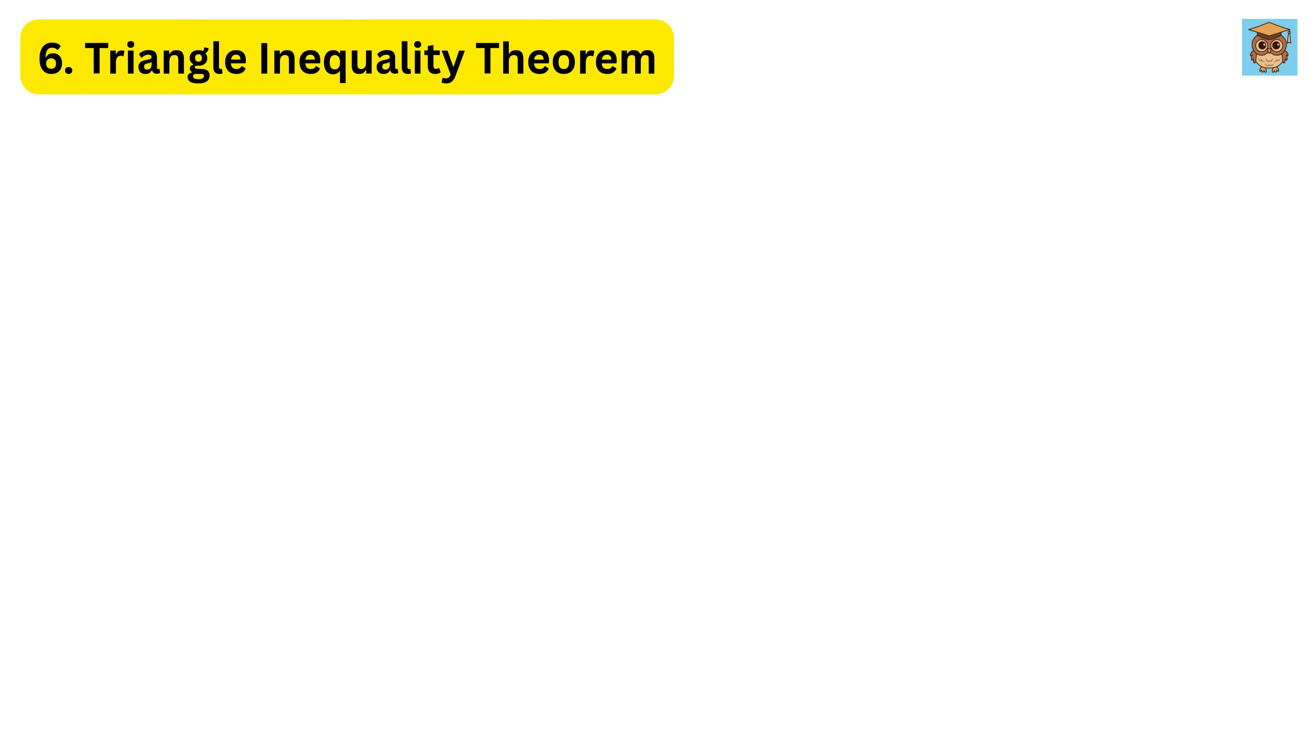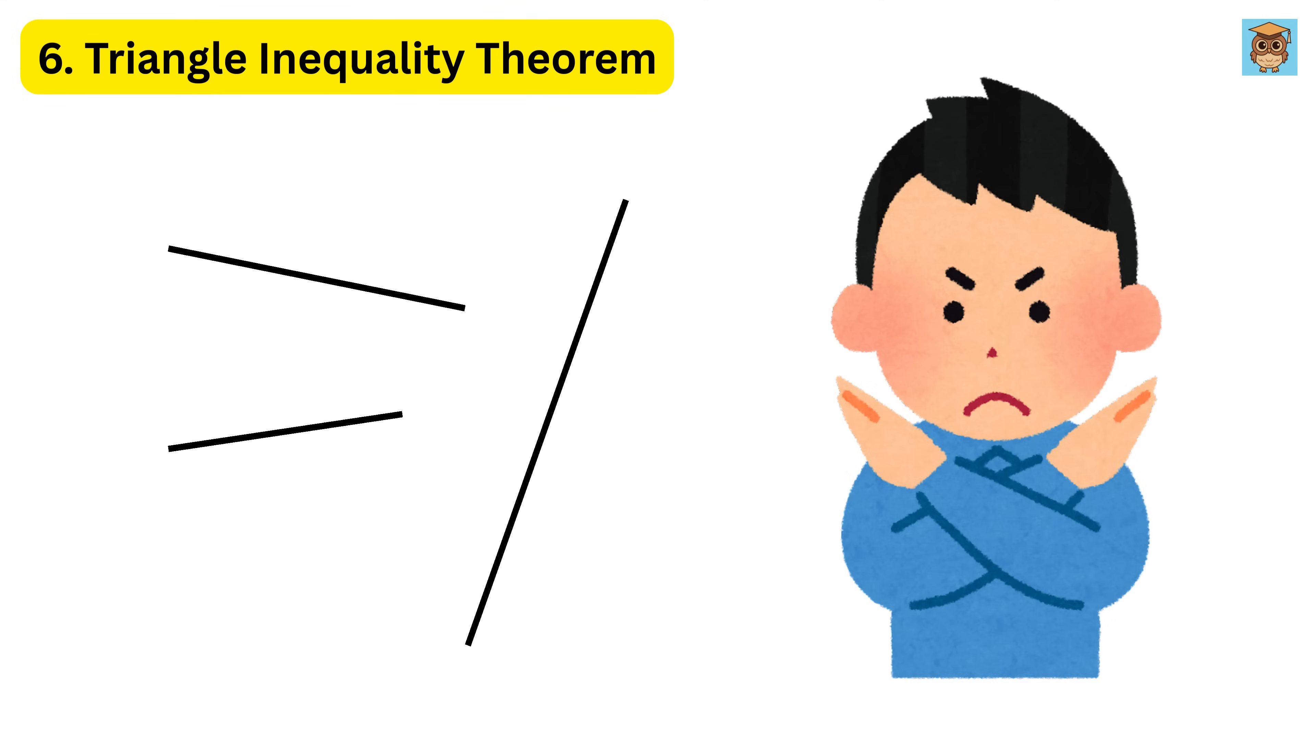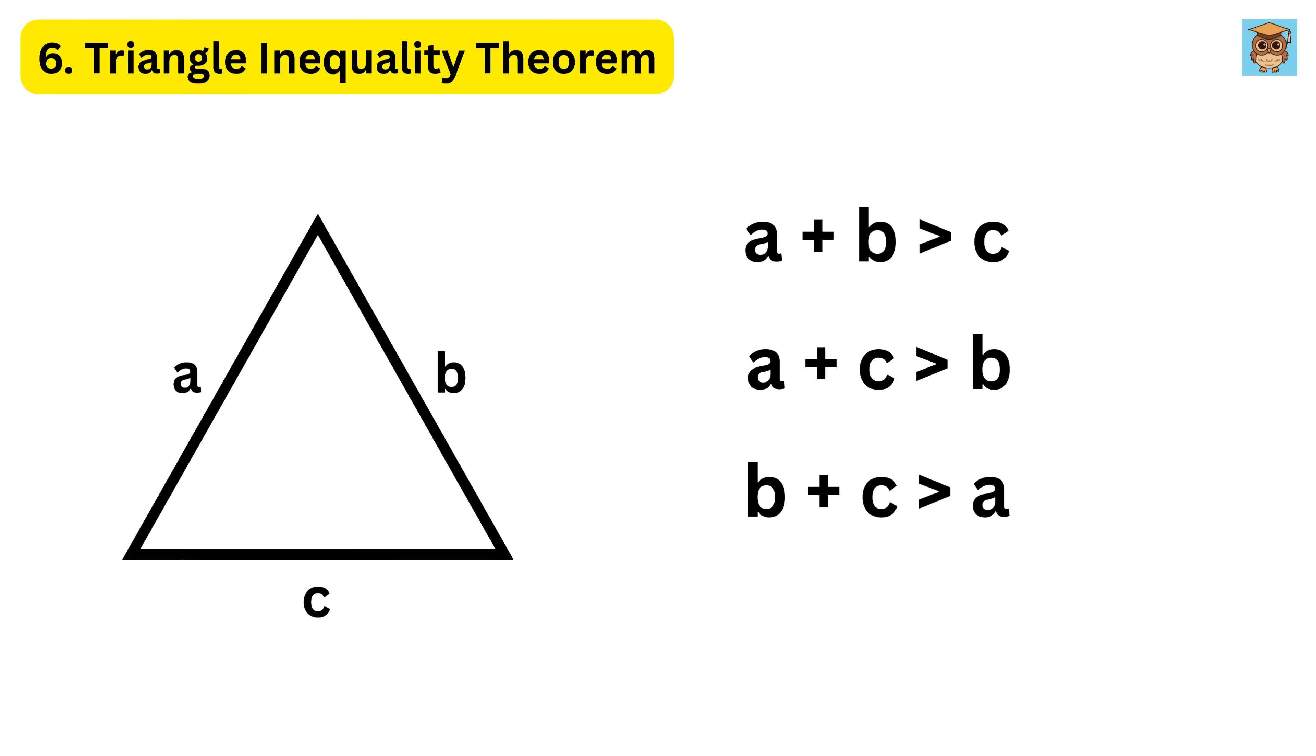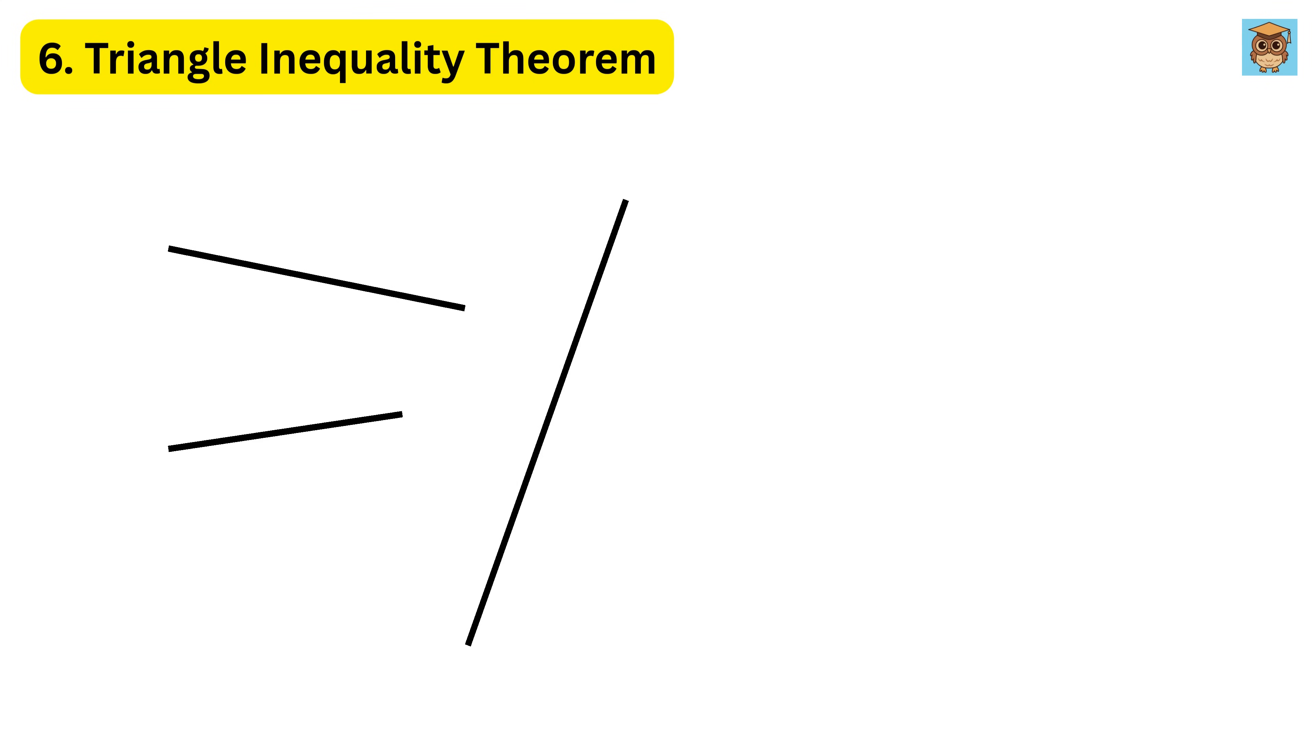6. Triangle Inequality Theorem. Can any three lines make a triangle? Nope. The Triangle Inequality Theorem says that the sum of any two sides of a triangle must be greater than the third side. Imagine you have sticks of lengths 3, 4, and 8. Try making a triangle. 3 plus 4 is 7, but that's less than 8, so they will never make a triangle, no matter how hard you try.